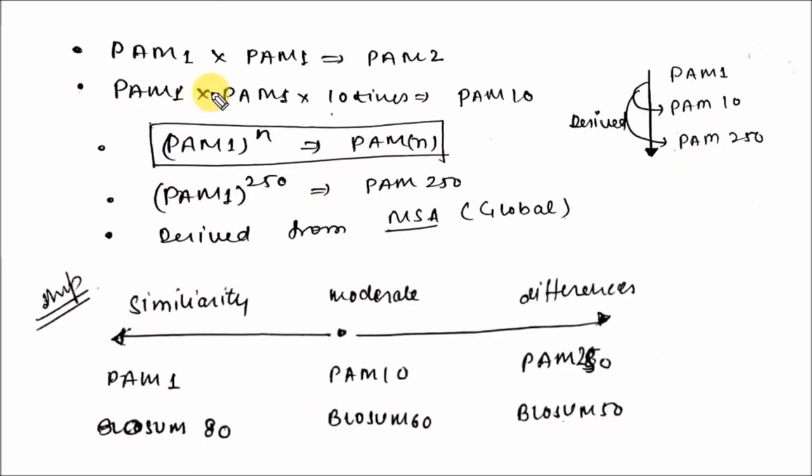The higher PAM matrix can be calculated by this: PAM 1 and PAM 1 give rise to PAM 2 matrix. If you want to calculate PAM 10 matrix, then multiply the PAM 1 matrix by 10 times. Similarly, if you want to calculate PAM n matrix, then this is a formula: PAM 1 to power n. Here is a very important representation given. Just remember this representation.